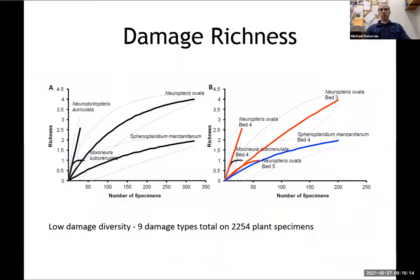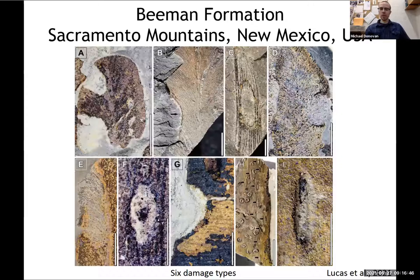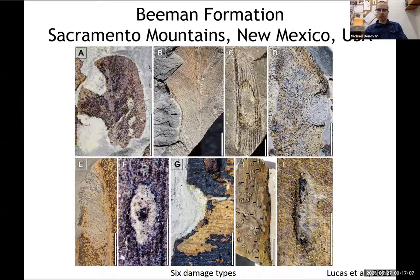There is really low damage diversity at most of these sites in the Pennsylvanian, especially compared to most sites in the Permian. I think there was a diversification of feeding strategies happening at this time that we can see by studying from the earlier Pennsylvanian through to the Permian, when there is a lot more piercing, sucking, and galling. This pattern is also found at other sites in Western Pangea — for example, the Beeman Formation in the Sacramento Mountains of New Mexico shows a lot of the same types of herbivory: margin feeding, pathogen damage, and oviposition marks.